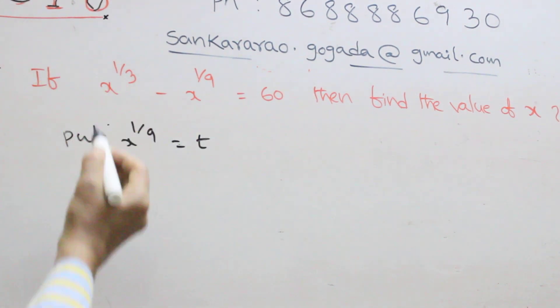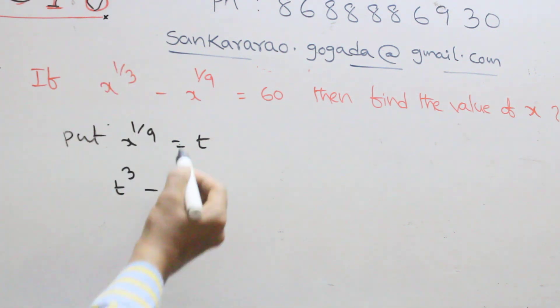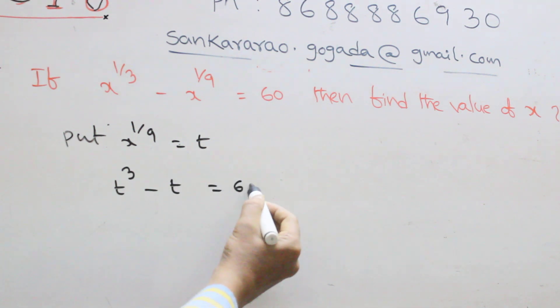In this one, X power one by three means t cubed minus X power one by nine equal to t, that equal to sixty. In this one, t is the common. T square minus one, that equal to sixty.